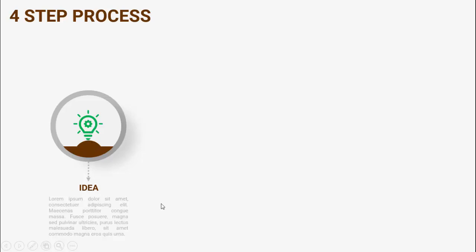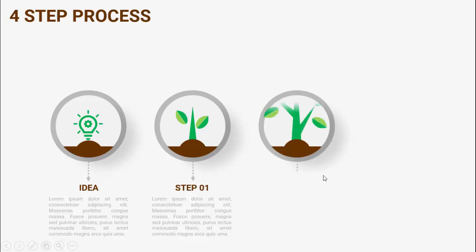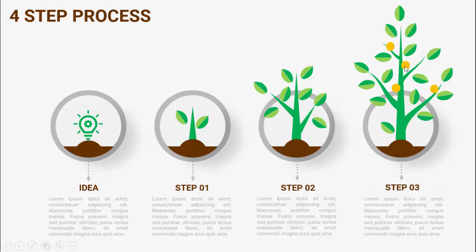When clicked, the idea converts and grows into a small plant — that's step one with detailed text. In step two it grows further, and in step three it grows even bigger with small fruits appearing. This is a great slide to show the growth of a company, your work, or anything you like. You can also add more steps.